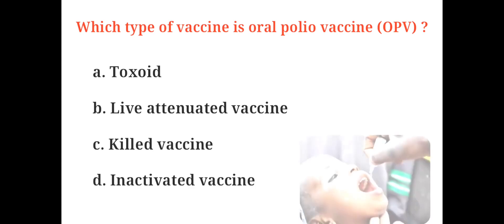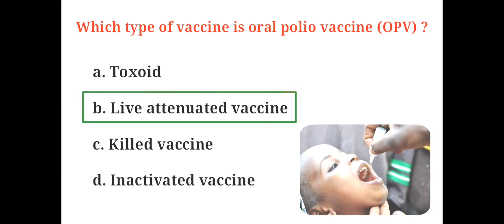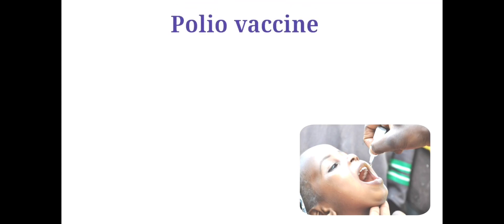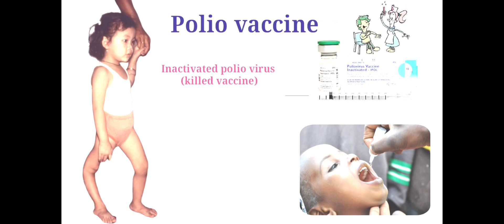Which type of vaccine is oral polio vaccine? A. Toxoid, B. Live attenuated vaccine, C. Killed vaccine, D. Inactivated vaccine. And the correct answer is B. Live attenuated vaccine, i.e., live weakened vaccine. Polio vaccines are vaccines used to prevent poliomyelitis. There are two types: inactivated poliovirus vaccine, which is a killed vaccine given as an injection, and a live weakened poliovirus vaccine given by mouth.